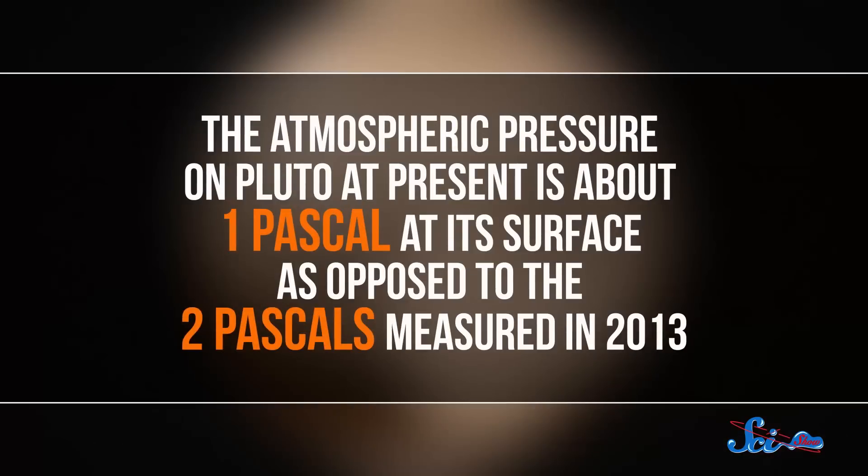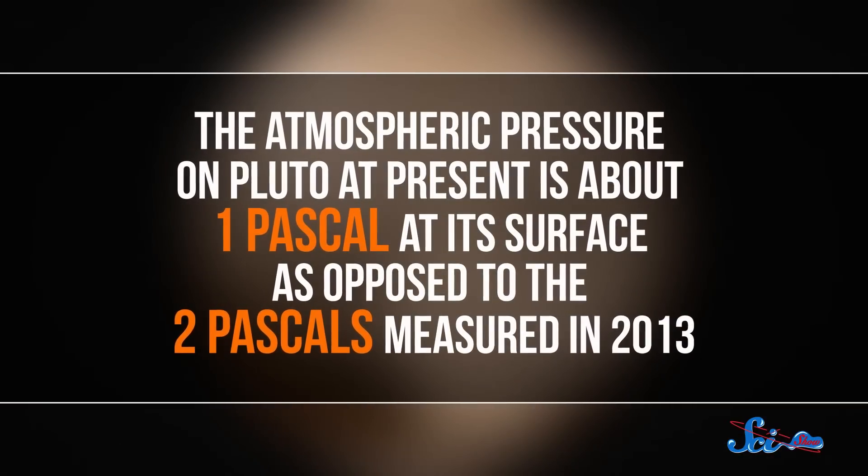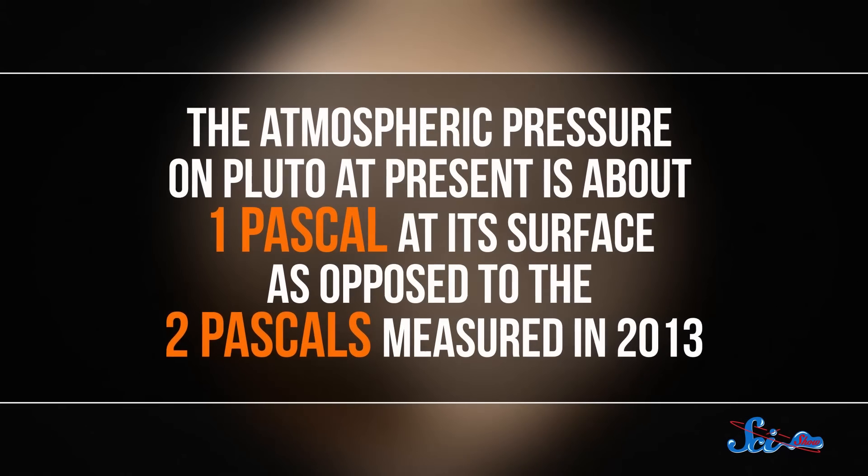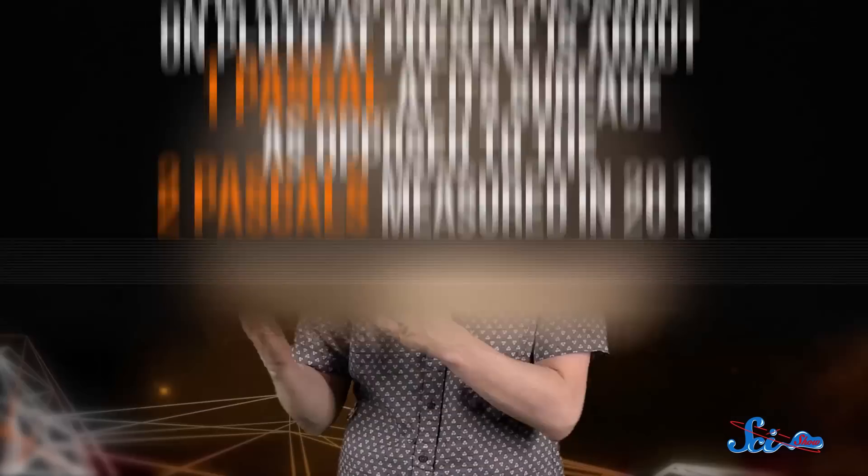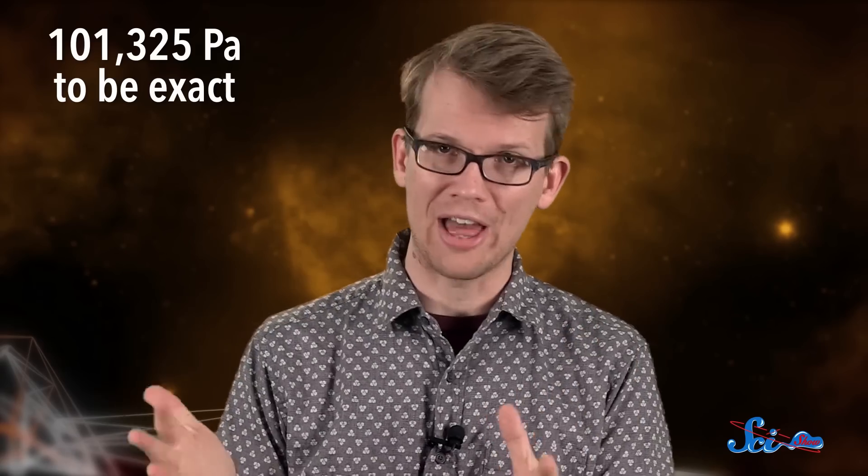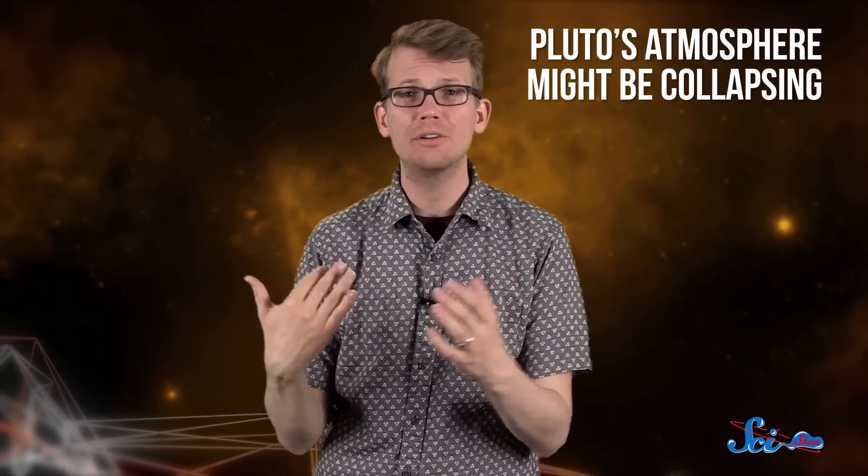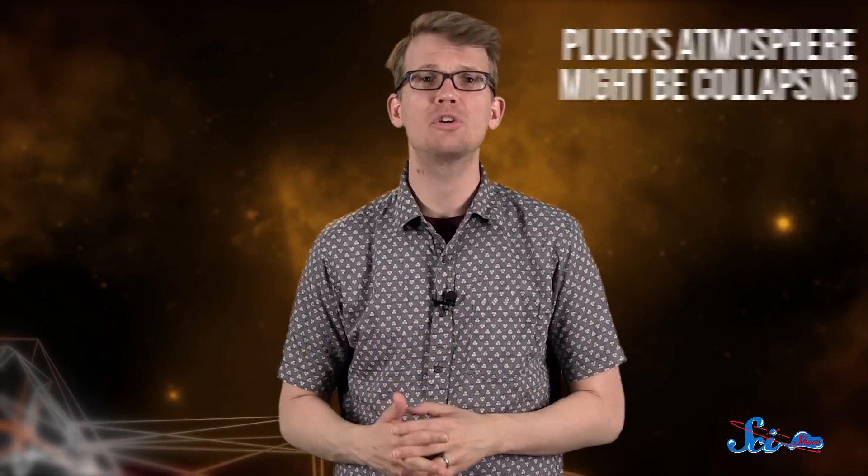Based on how the radio waves were bent by Pluto's atmosphere, scientists think the atmospheric pressure there is only about one pascal at its surface, as opposed to the two pascals that they measured in 2013, when Pluto passed in front of a background star. By comparison, the standard pressure at sea level on Earth is over 101,000 pascals. The team thinks that Pluto's atmosphere might be collapsing, because it's moving away from the Sun, which is causing some of its nitrogen to condense onto the surface.